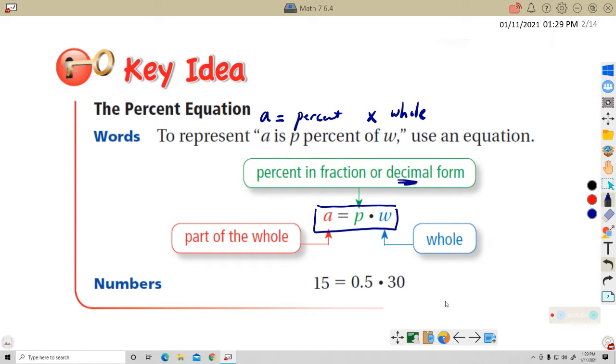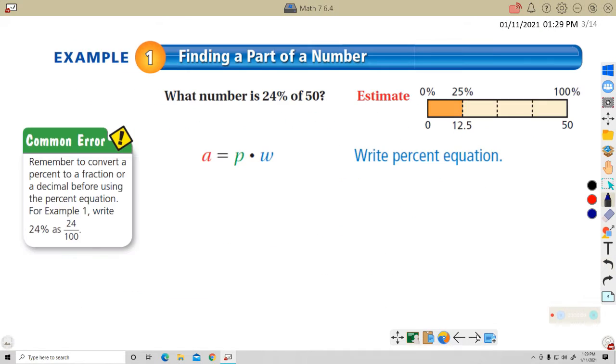Let's try a couple examples here. What number is 24% of 50? They're going to give us two numbers, and the third number is one that we're going to find. The 'of' means multiply, so it's going to be of 50. A number equals 24%, and we're going to put this as a decimal: 0.24 times 50.